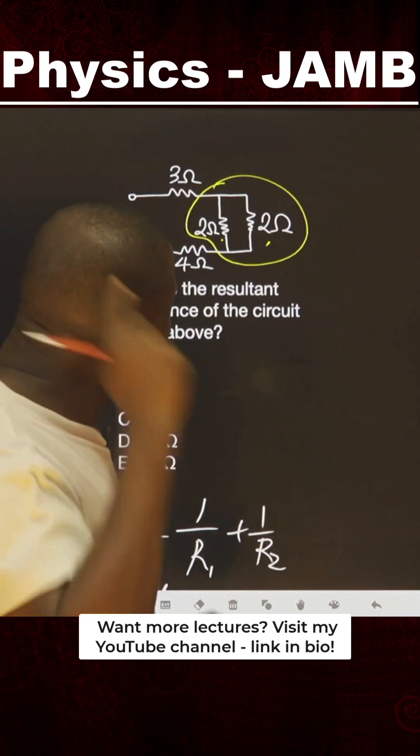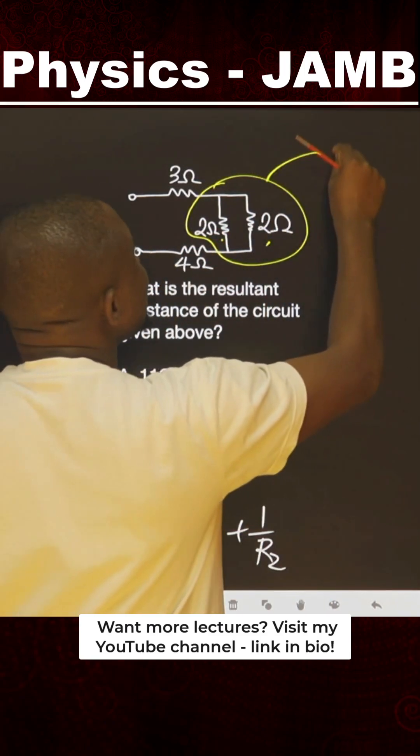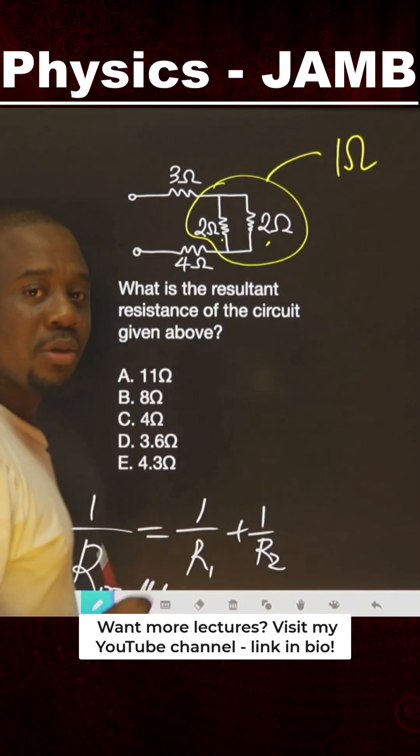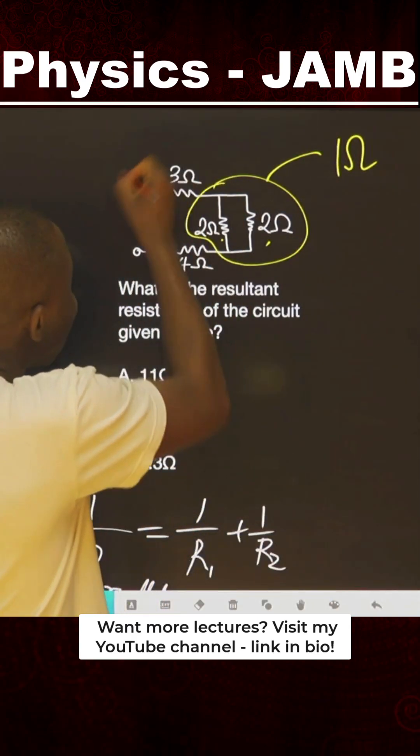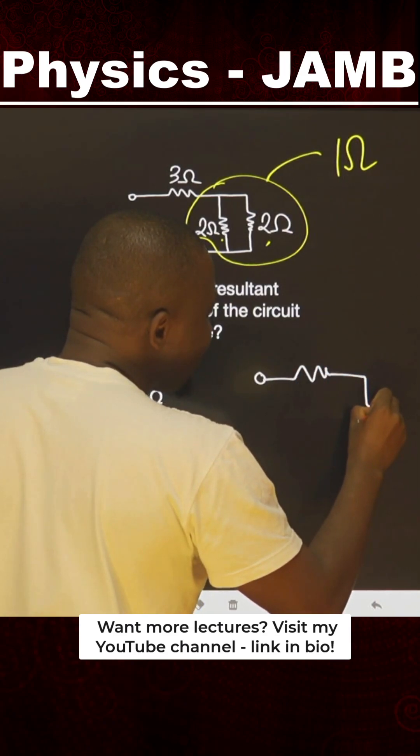So therefore I can represent these two with 1 ohm. Now you agree with me, here we now have series connection. Why series connection? Because this is now 3 ohms, these two they gave us 1 ohm, while this one is 4 ohms.